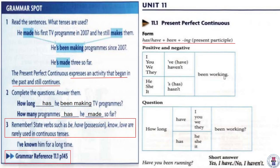Let's take a closer look at the present perfect continuous. Look at the grammar right here. It says: he made his first TV program in 2007, and he still makes them. In this sentence, 'he made' is past tense because he did it in 2007 — it's no longer 2007, it's done. 'He still makes them' is present tense — it's what he usually does every day. 'He has been making programs since 2007' — he started in 2007 and he's still making them today. He's made three so far — he started and finished each one in the past.